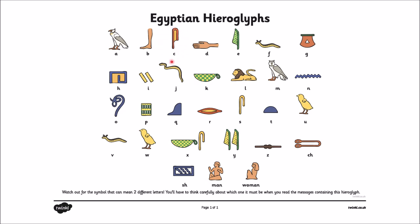This, I'm afraid to say, is just a mistake. This is the S, and you can see it here — S. So why it appears twice, I don't know. But as it warns us, which I quite like: 'watch out for the symbol that can mean two different letters — you'll have to think carefully about which one it must be when you read the messages containing this hieroglyph.' So watch out for that, because it can have two meanings. Oh, hang on — it's got another one over here. It's got three. But that's not quite right.